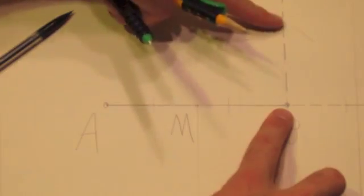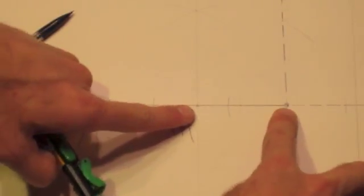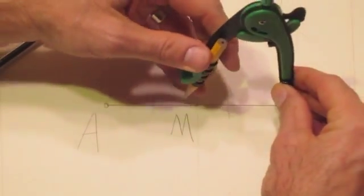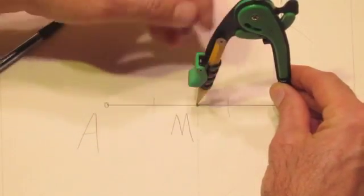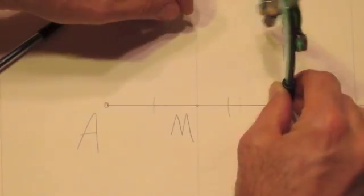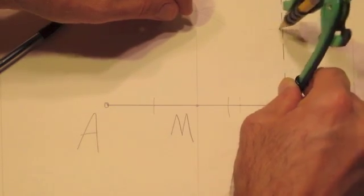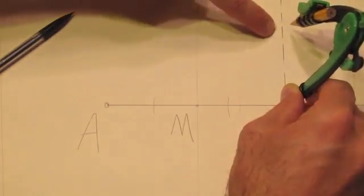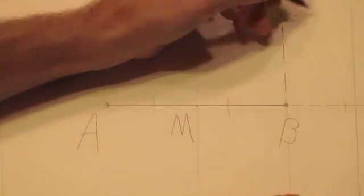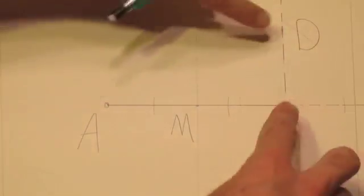All right, after that, you want to mark a point D up here so that MB is equal to DB. So I calibrate my compass point here. I might have to change it so that now I have the midpoint, and I'm going to swing it up and make an arc. It intersects up there. I'm going to call that point D. This segment and this segment are congruent.